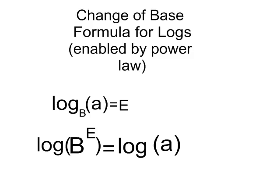Now, I know that my exponent rules basically tell me this exponent can come down in front of the log. So e times the log of b is going to be equal to the log of a.